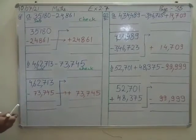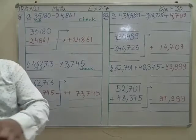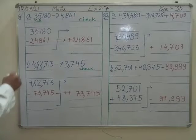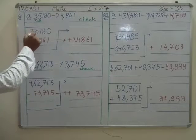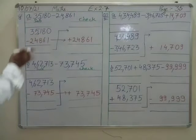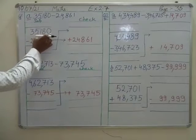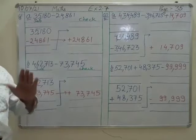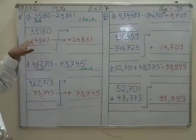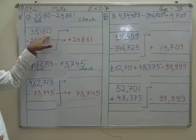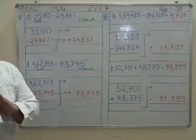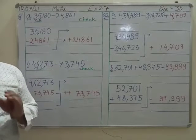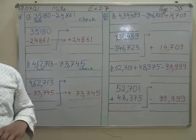Now how will we subtract? We will subtract the smaller number from the larger number. In question A, 35,180 is the minuend. 24,861 is the subtrahend, and the result is the difference. You can write M, S, or D for minuend, subtrahend, or difference respectively.